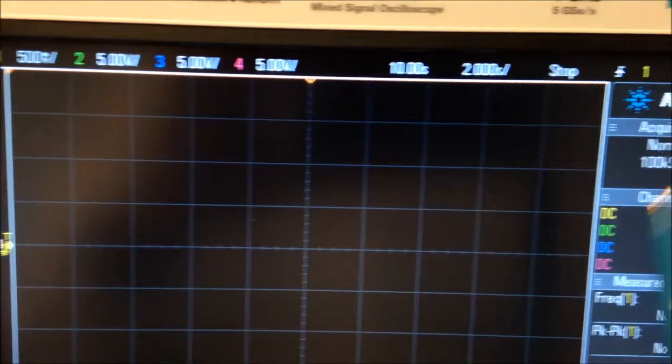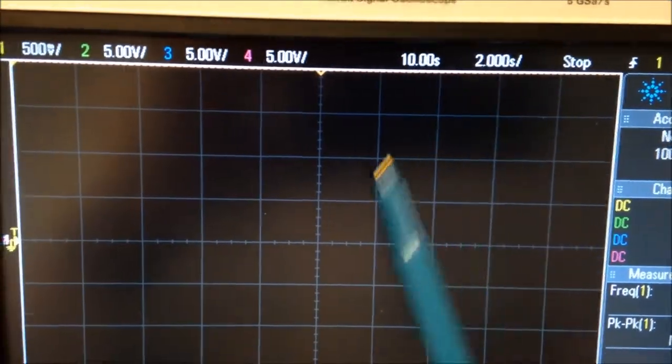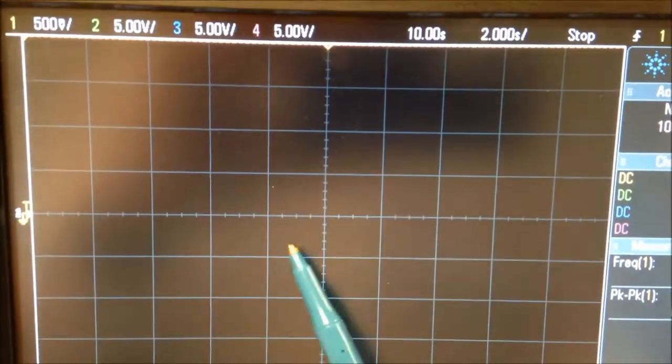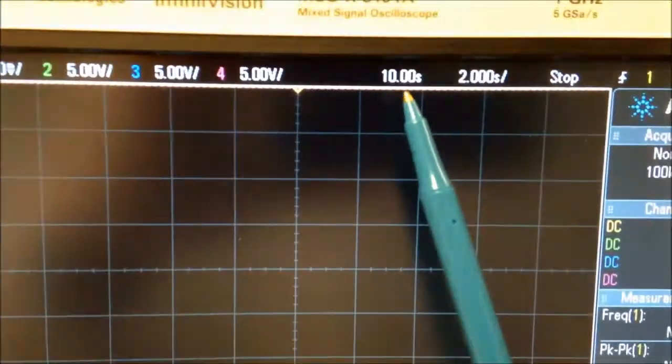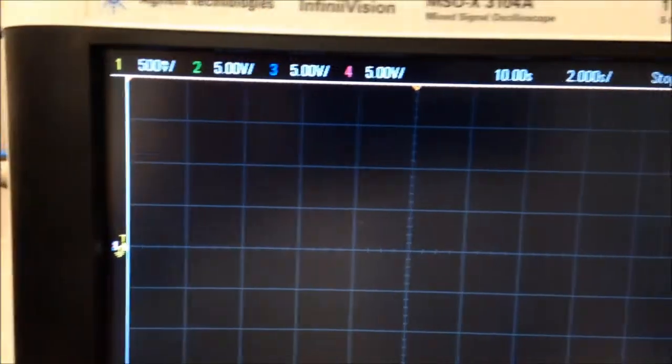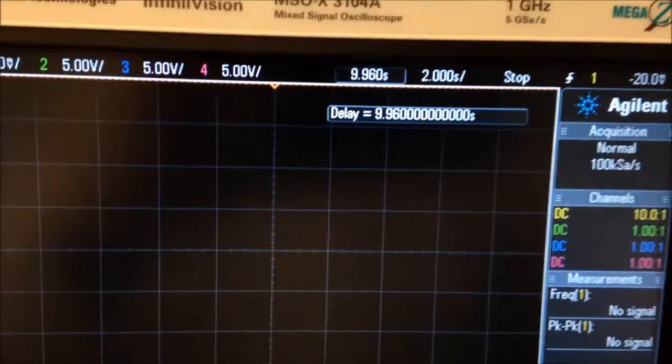In the case of the 3000 scope, I have 2 seconds per division, and I have 1, 2, 3, 4, 5, so that's a delay of 10 seconds, so I have the delay set up right there at 10 seconds.